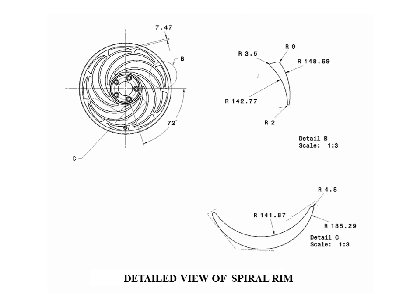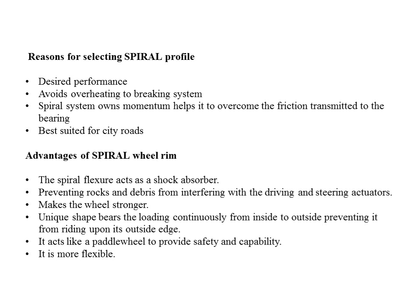This is the detailed view of the spiral wheel rim with lots of dimensions. The reason for selecting the spiral profile is for desired performance — it avoids overheating due to the braking system, the spiral system helps overcome friction transmitted to the bearing, and it is best suited for city roads. Advantages include: the spiral flexure acts as a shock absorber, prevents rocks and debris from interfering with driving and steering actuators, makes the wheel stronger, bears loading continuously from inside to outside preventing riding on the outside edge, acts like a paddle wheel for safety and capability, and is more flexible.